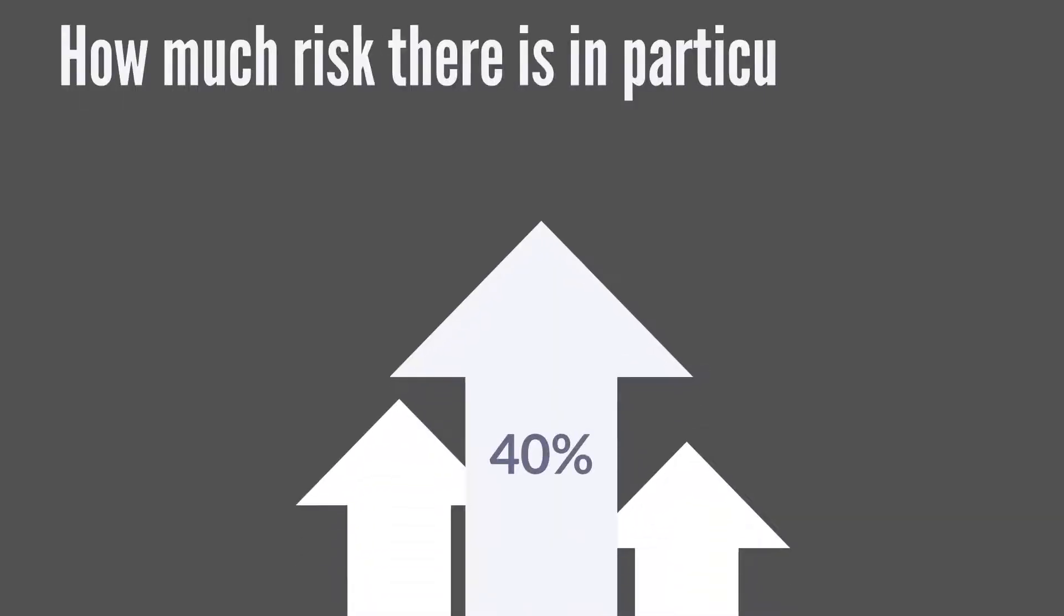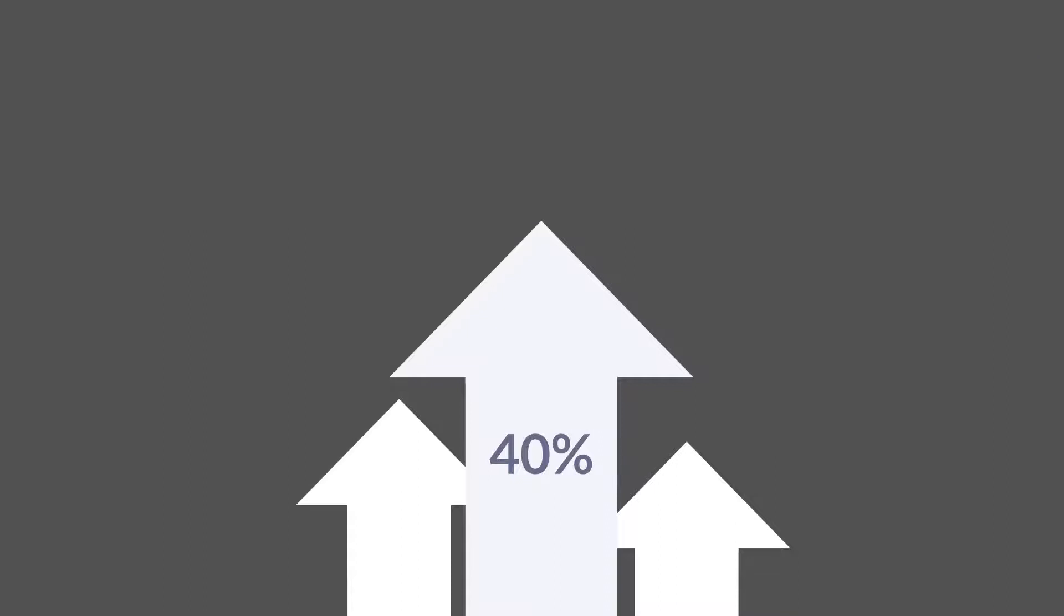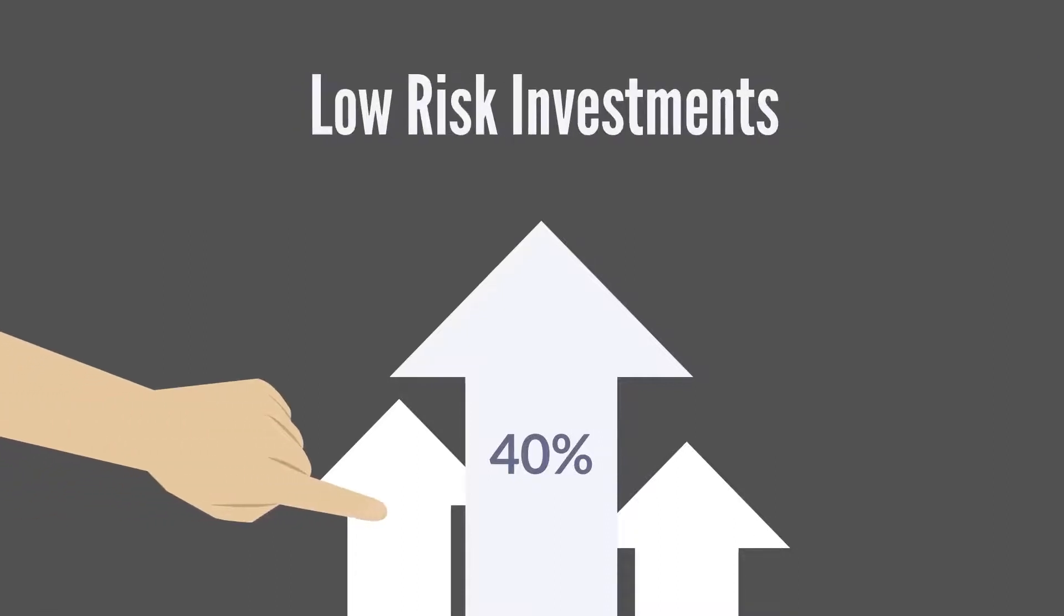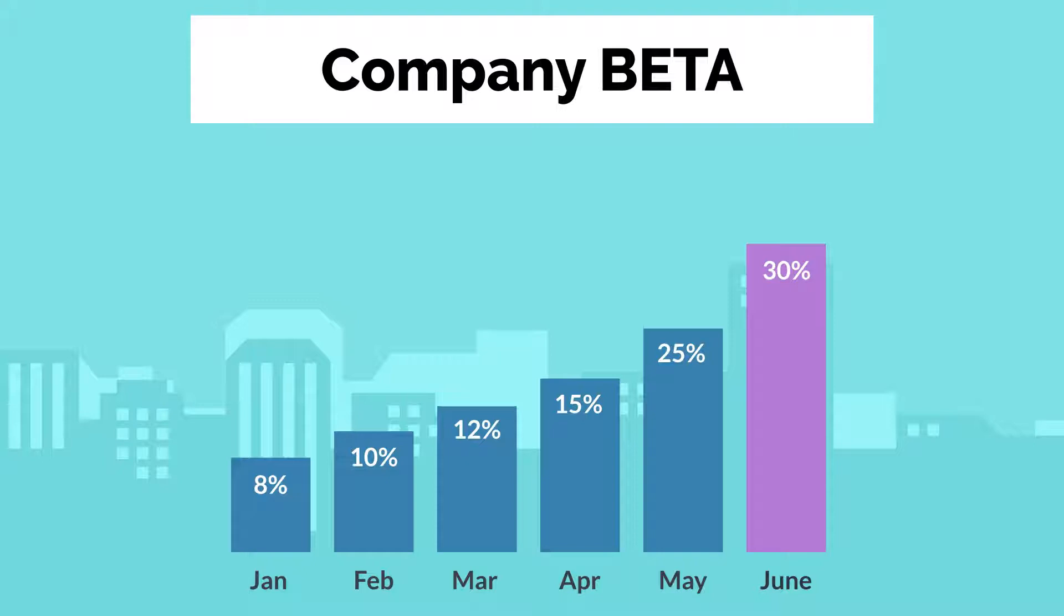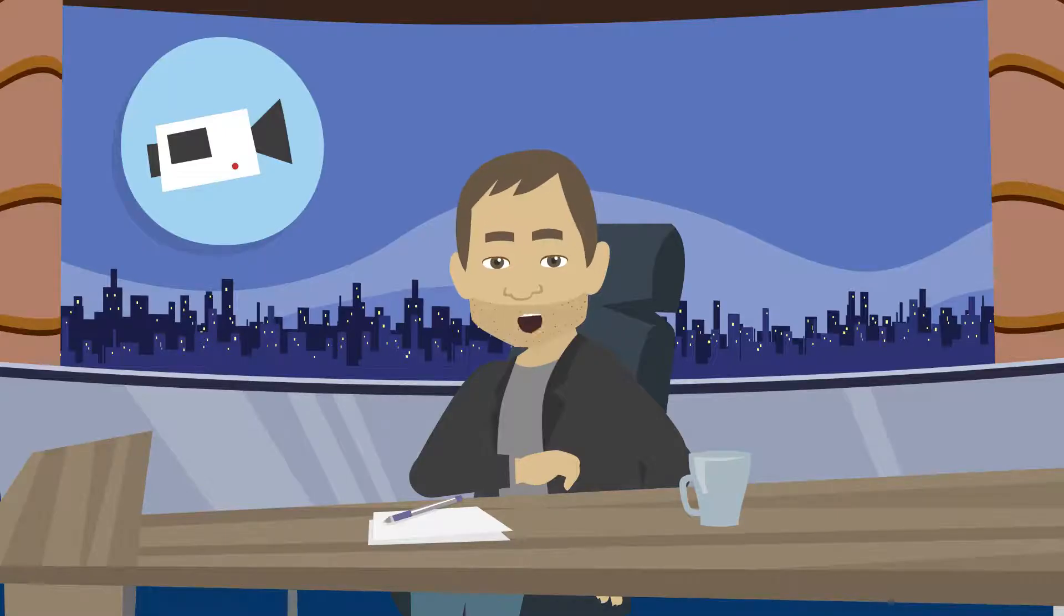You can use beta to assess how much risk there is in a particular security compared with other securities. If you are looking for low risk investments, then stocks with lower betas would be a better choice than those with high betas. A company's beta may change over time if its business mix changes significantly or it undergoes some major event. Now, watch this video to the end and you'll be a beta financial wizard.